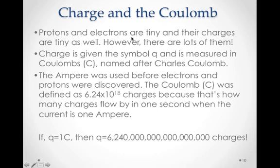Charge and the Coulomb. Charles Coulomb. Protons and electrons are tiny, tiny, tiny, and their charges are tiny as well. However, there are lots of protons and lots of electrons in matter. Charge is given the symbol Q, and is measured in Coulomb C, named after Charles Coulomb. The ampere, a measure of current, was used before electrons and protons were discovered. The Coulomb was defined as 6.28 times 10 to the 18th charges, because that's how many charges flow by in one second, when the current is 1 ampere, which is a standard unit of current, discovered before we discovered the atom, and that charges were so small.